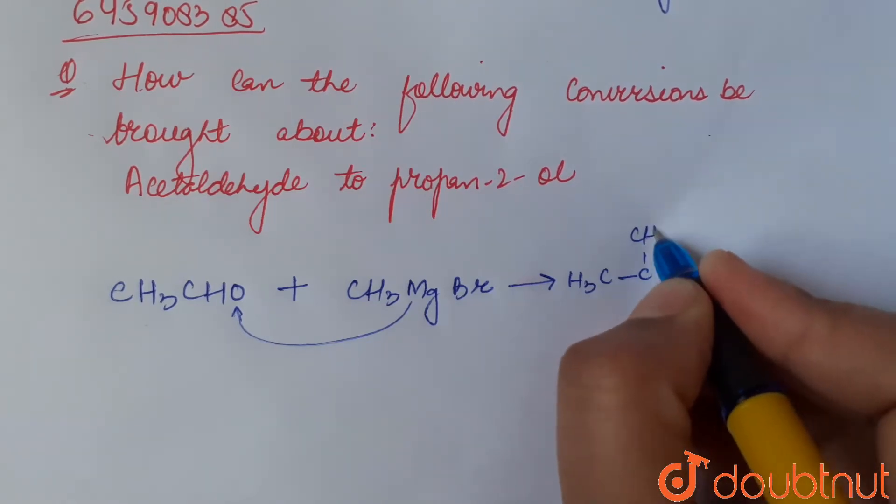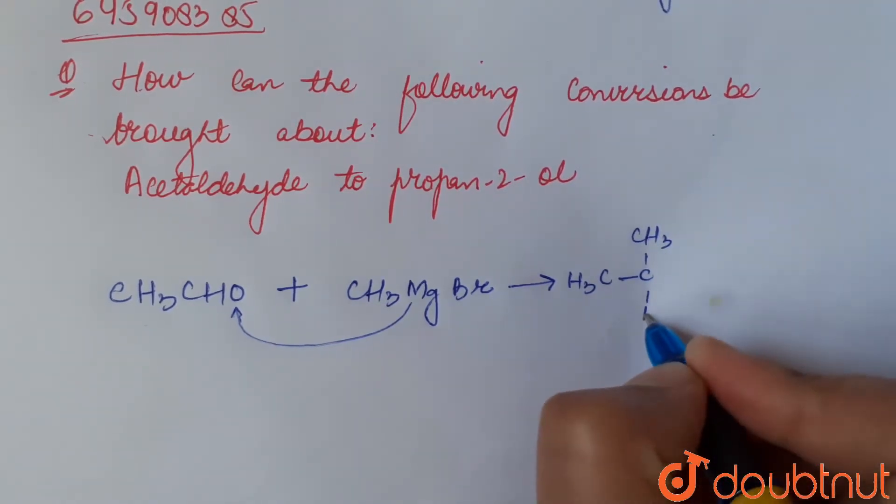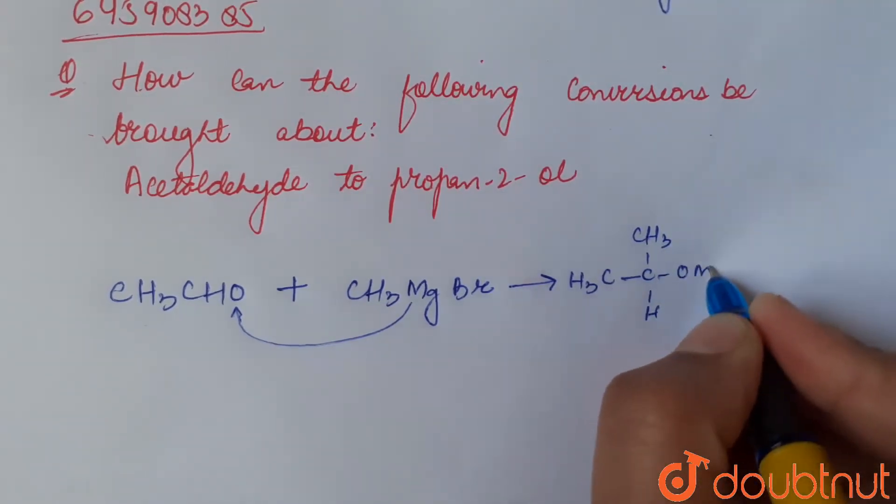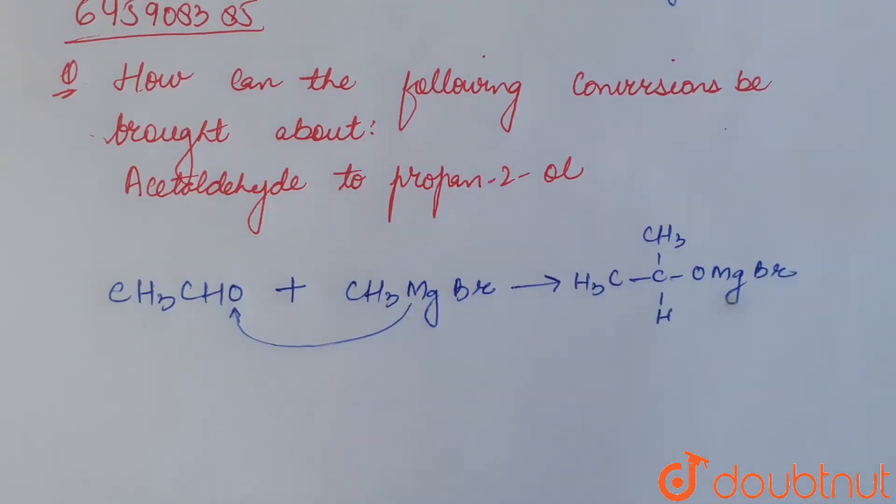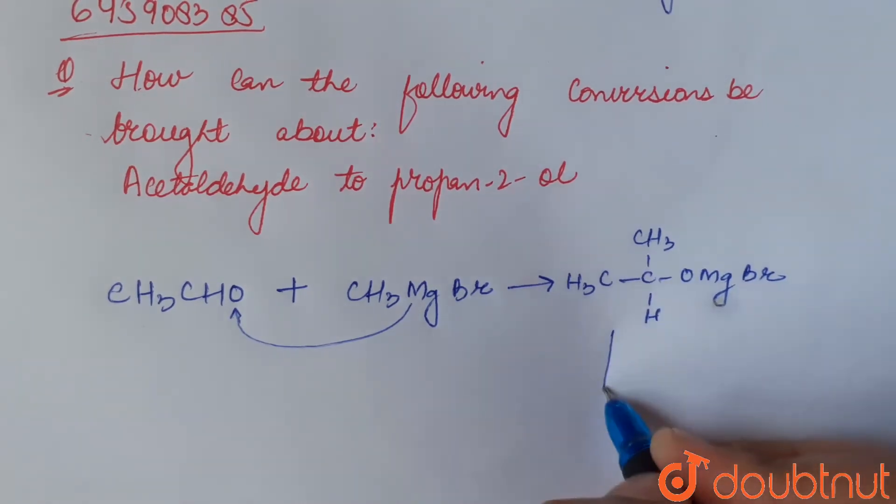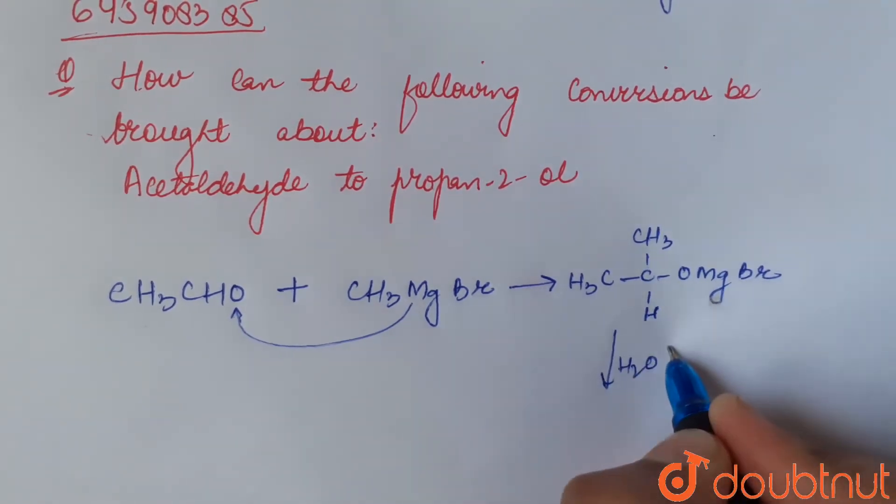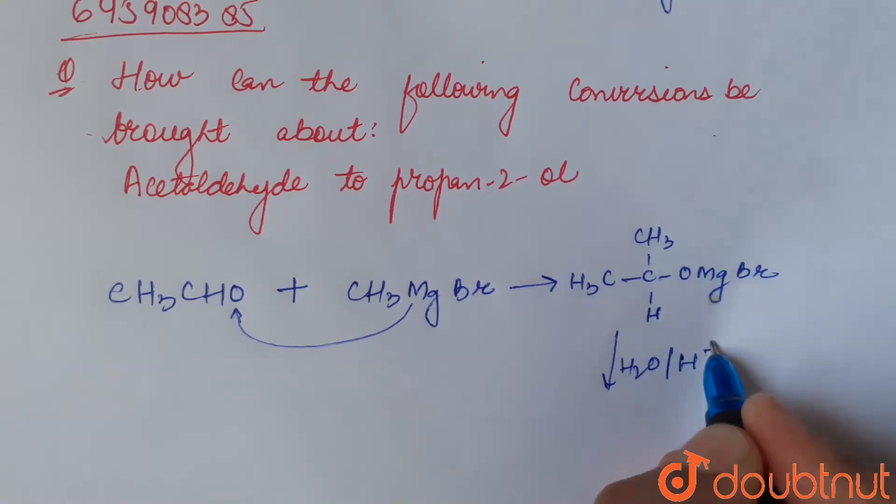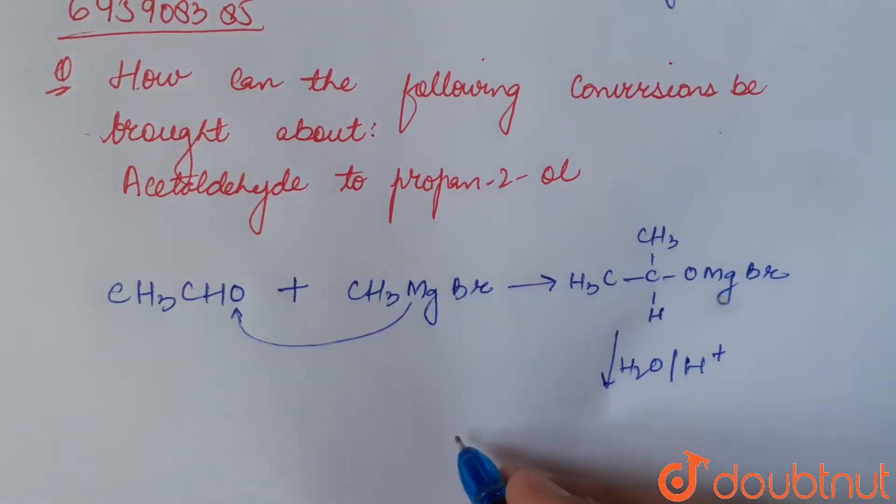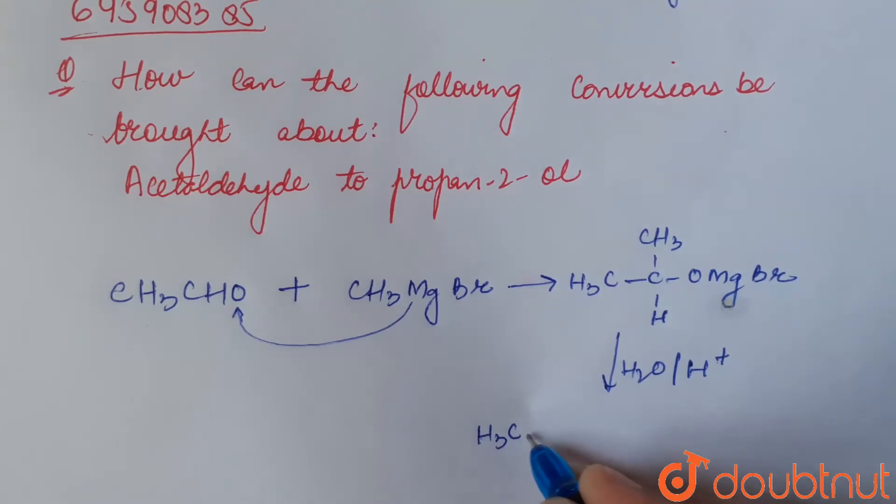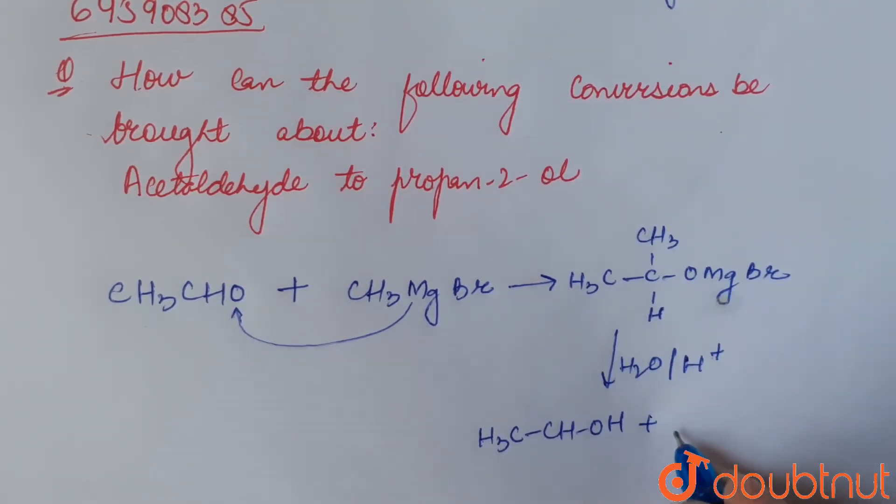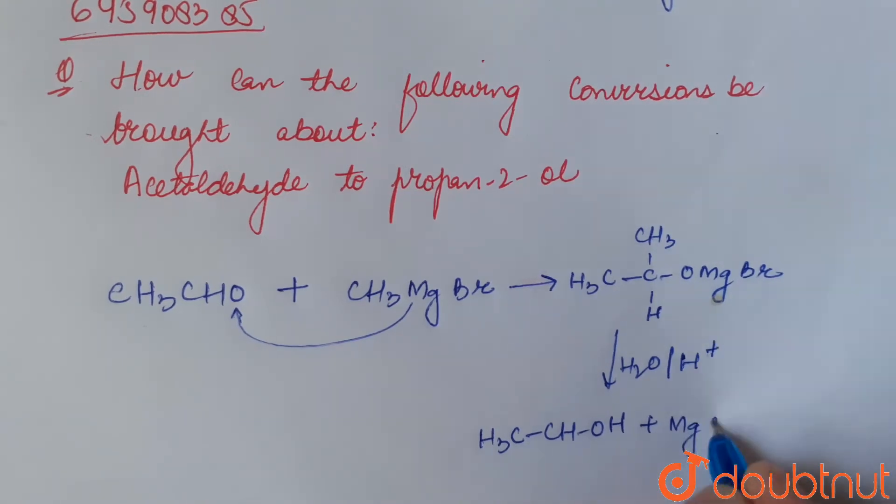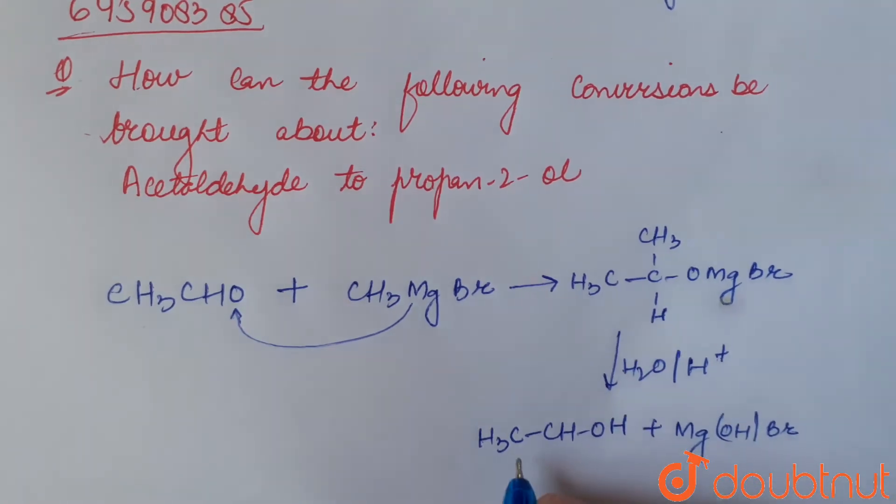Now when this compound is hydrolyzed in presence of acidic medium, we get 2-degree alcohol, that is CH3-CH-OH, along with Mg(OH)Br as a byproduct.